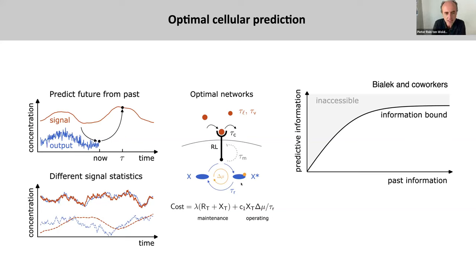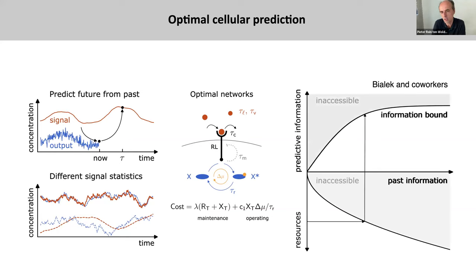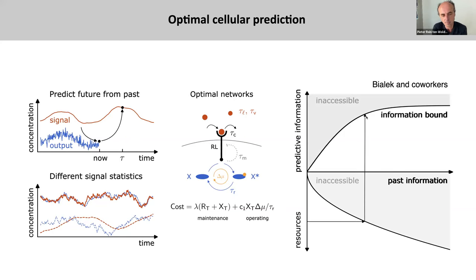These resource costs put a bound on the amount of information the system can extract from the past signal, which in turn puts an upper bound on the amount of information it can possibly have about the future signal. To understand this, we also have to understand the energetics of copying.